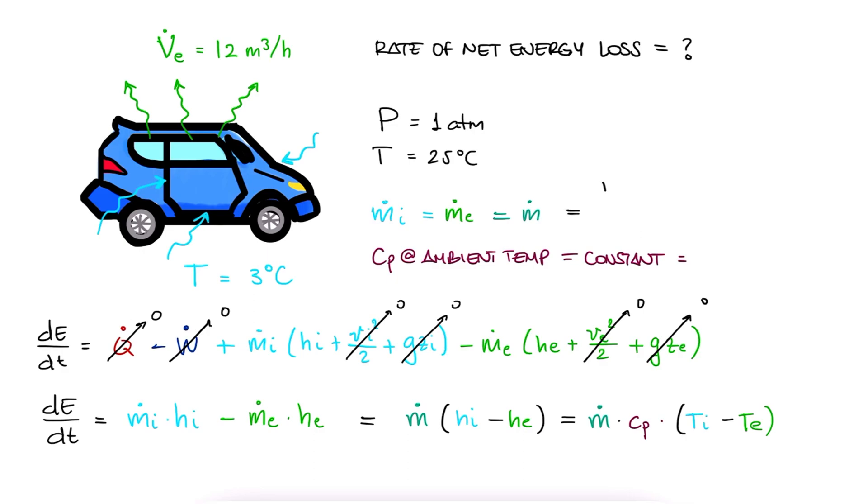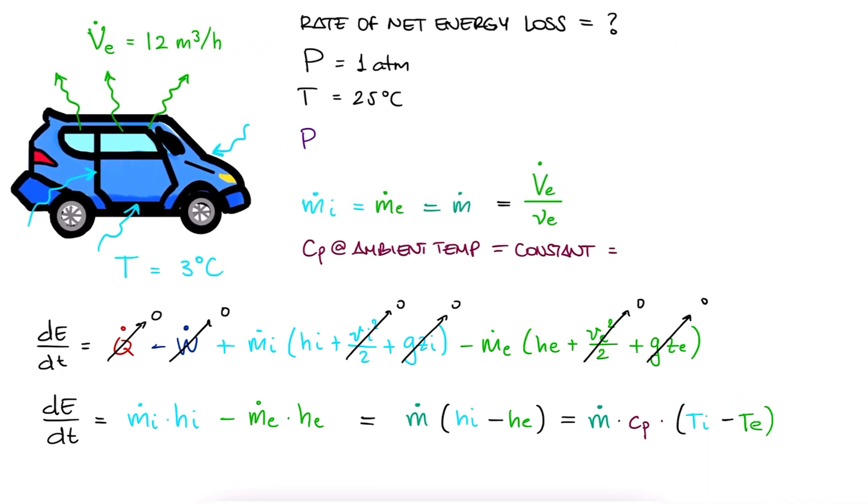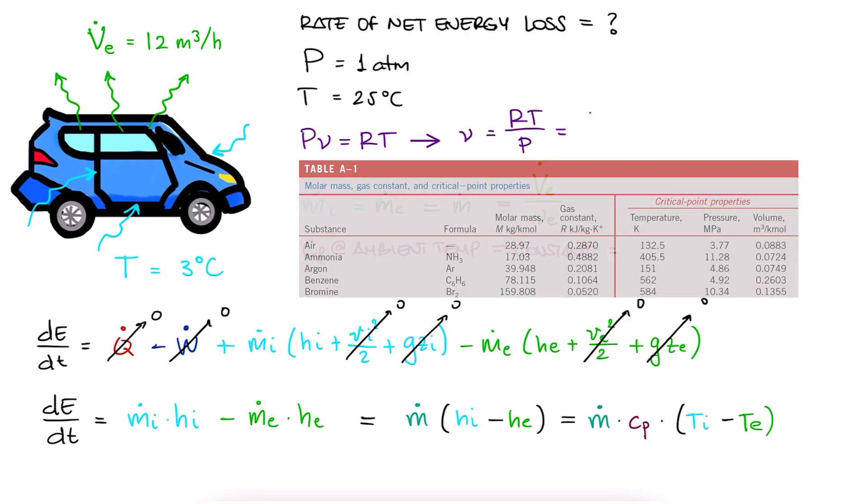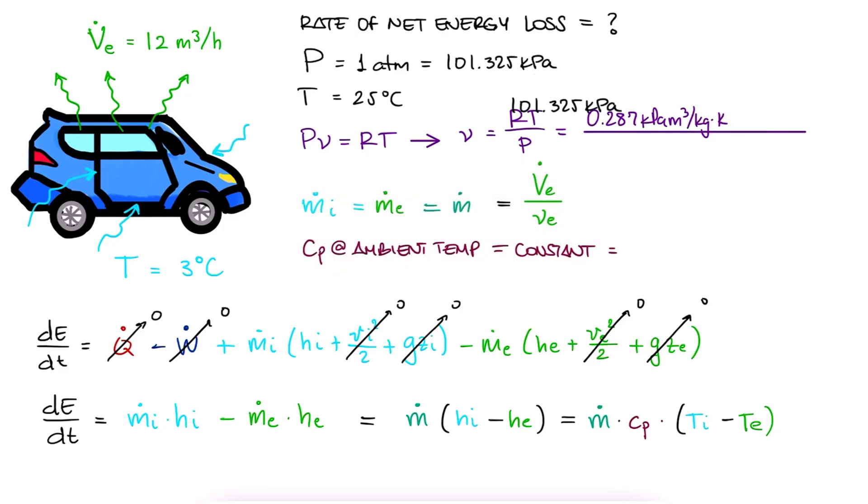The mass flow rate can be found if we divide the volumetric flow rate, which was given, by the specific volume. And the specific volume can be found using the ideal gas equation. We solve for the specific volume, we look up the gas constant for air, we substitute the pressure and the temperature in Kelvin, and we find the specific volume. And with the volumetric flow rate, and switching from hours to seconds, we find the mass flow rate.